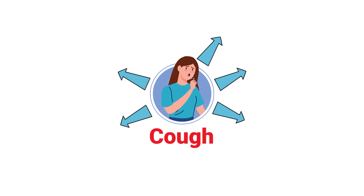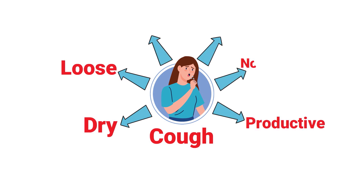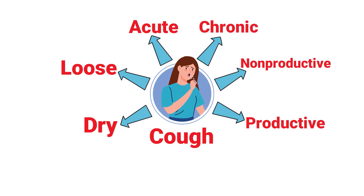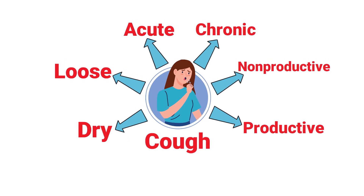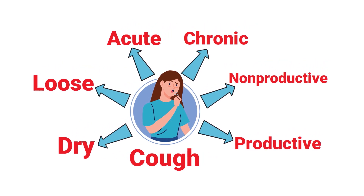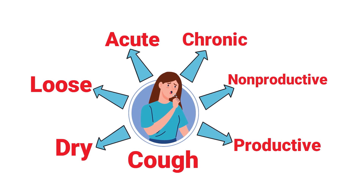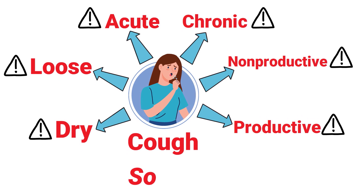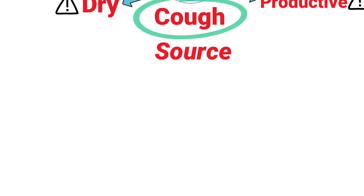A cough may also have different characteristics. Some examples include a dry or loose cough, a productive or non-productive cough indicating whether or not there is sputum, or it could be an acute or chronic cough — meaning whether it is a new symptom or has been occurring for a longer period of time. These characteristics are important because they can help determine the patient's source of coughing.